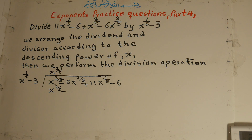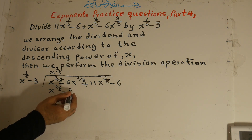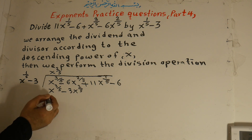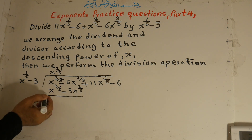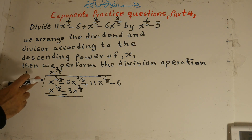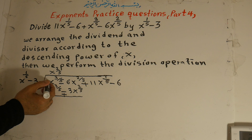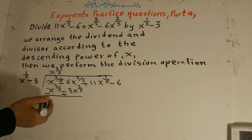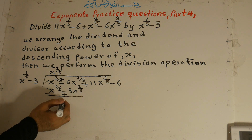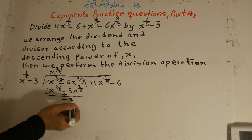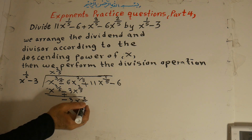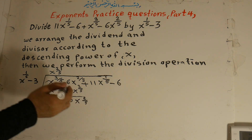Now we multiply x to the power of 2 over 5 with the divisor. x to the power of 2 over 5 times x to the power of 1 over 5 is x to the power of 3 over 5. Positive times negative is negative, so x to the power of 2 over 5 times 3 is 3x to the power of 2 over 5. Then we carry the positive 11x to the power of 1 over 5 down.